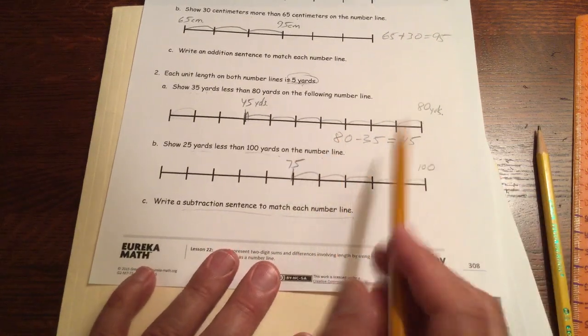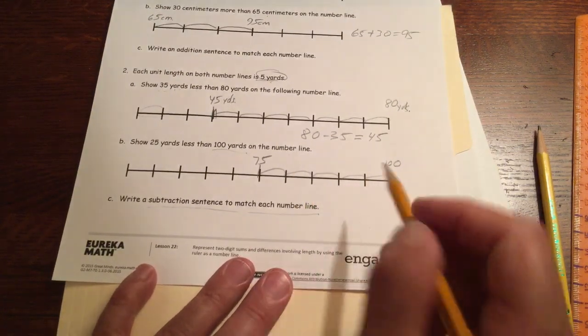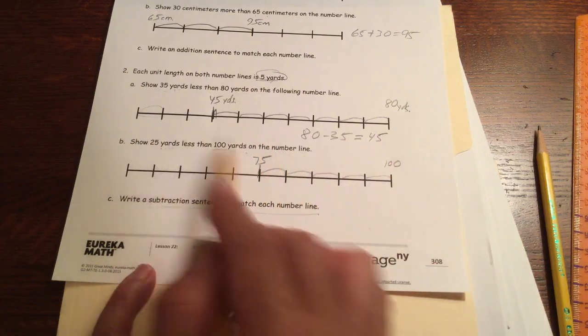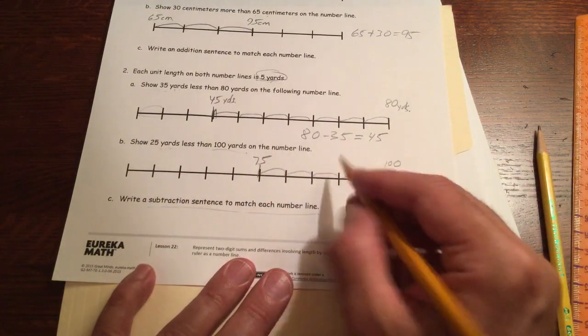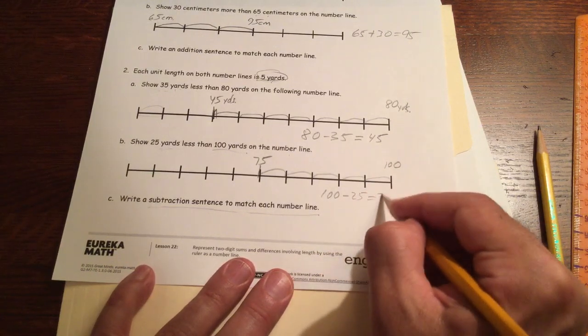And if you know your 25s, 25, 50, 75, a dollar, right, quarters, you can know that 100 minus 25 is going to be 75. And so our subtraction sentence is 100 minus 25 equals 75.